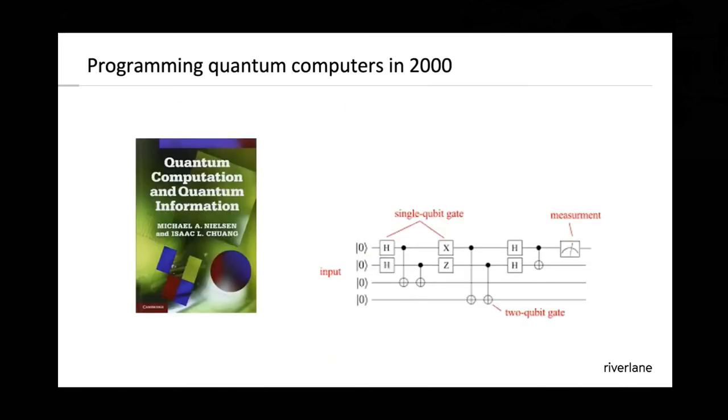So how do we program these devices? Nielsen and Chuang is of course the Bible for the field. I still have a copy here on my desk. And it's very prescient book. In 2000, it said, look, think of a quantum computer as a circuit. It implements gates and there are registers that are initialized. And this is a hugely important way of thinking about quantum computing. It's a very useful way to think about quantum computers. And all of the results on quantum algorithms have largely been in this model of quantum circuits. So trying to reduce the number of gates, some gates are more expensive because of error correction and so on. But fundamentally it's in this circuit model.